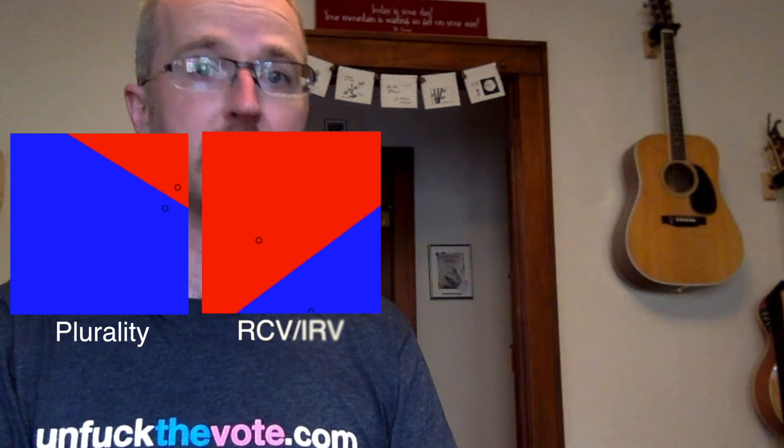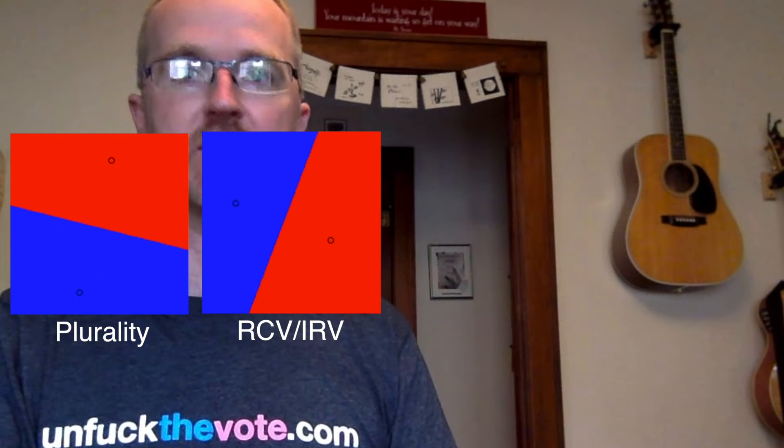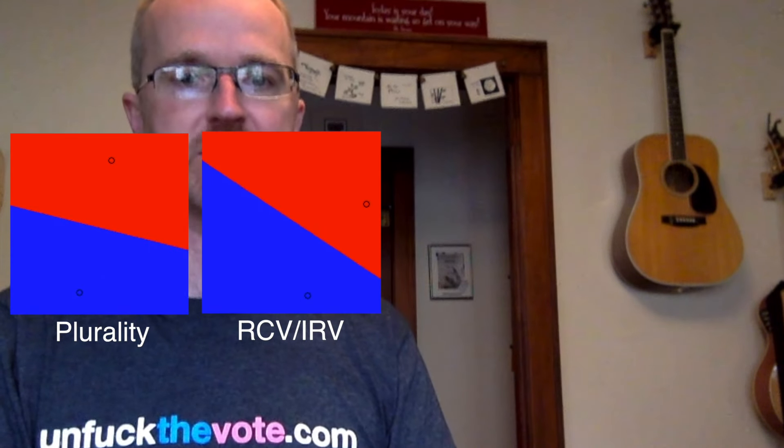We'll look at a few different ones. So plurality, that's the current system that we use here in the U.S. and in most venues. We'll also look at instant runoff voting. Sometimes people call that ranked choice voting. It's used in about a dozen cities in the U.S. and Maine just passed it statewide.